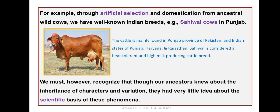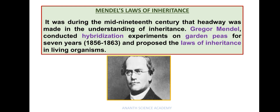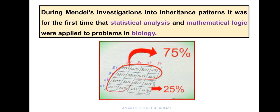We must however recognize that though our ancestors knew about the inheritance of characters and variation, they had very little idea about the scientific basis of these phenomena. It was during the mid-19th century that headway was made in the understanding of inheritance. Gregor Mendel conducted hybridization experiments on garden peas for seven years and proposed the laws of inheritance in living organisms.